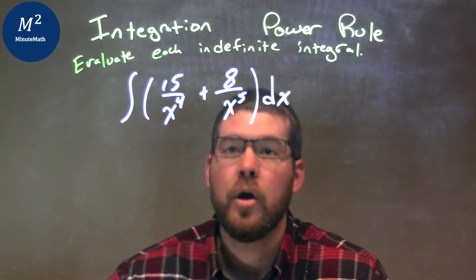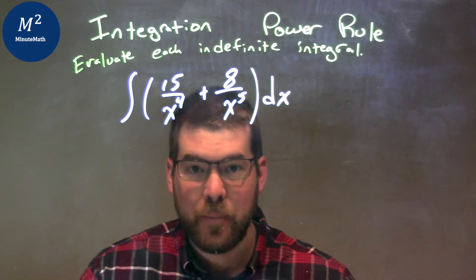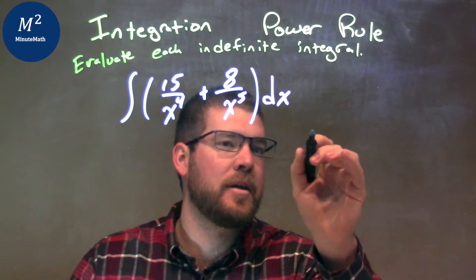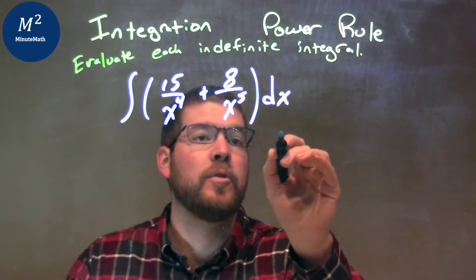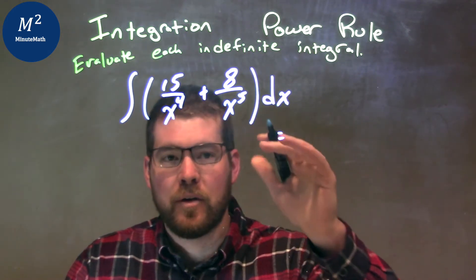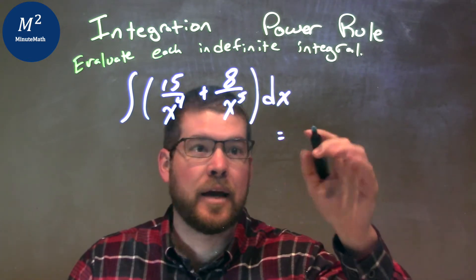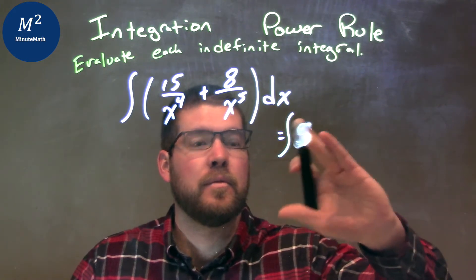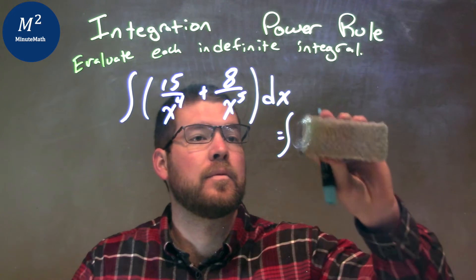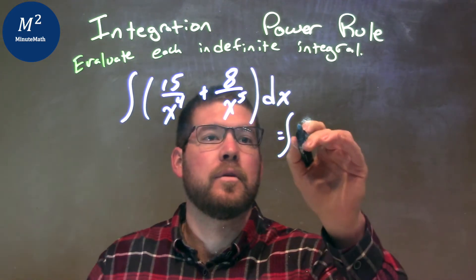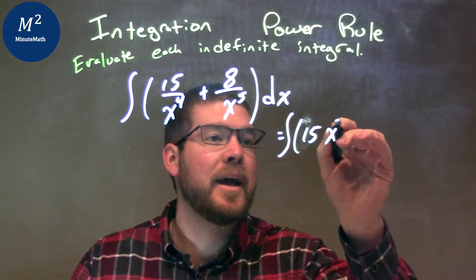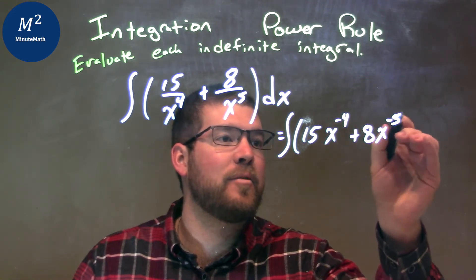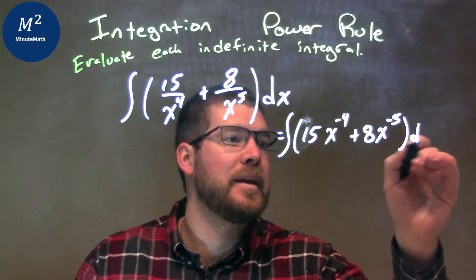What I like to do personally is rewrite this so that our exponents are in the numerator but negative. So we have the integral of 15x to the negative 4th power, plus 8x to the negative 5th power, dx. I find that easier when dealing with the power rule — it makes it a little easier to solve.